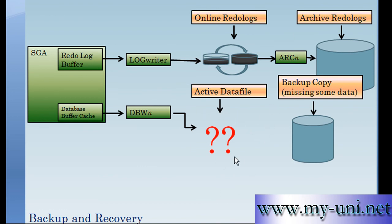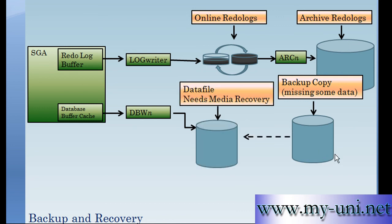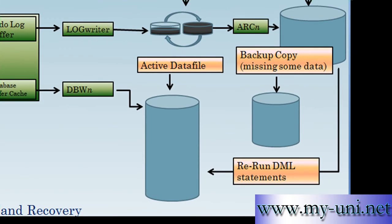Then you lose your active data file — something goes wrong and you accidentally delete it. What do you do? You copy the data file from your backup to the location where the database can use it and start using it again. But this data file is missing a lot of data, so you need to recover your database. By recovering, you rerun all the DML statements stored in your archive redo logs, or sometimes online redo logs as well, and recover your database with all committed transactions back to the point when you lost your active data file.